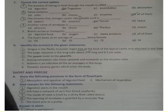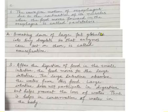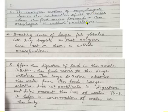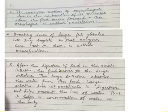Section C, questions 1 to 3. What is peristalsis? The wave-like motion of the esophagus due to the contraction of its muscles when food moves forward is called peristalsis. What is emulsification of fats? Breaking down of large fat globules into tiny droplets so that enzymes can act on them is called emulsification. Explain the role of the large intestine: after digestion in the small intestine, the large intestine absorbs water from the remaining food. It does not participate in digestion but helps prevent the loss of water, thus helping in conservation of water in the body.